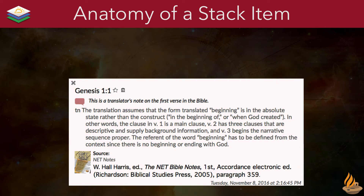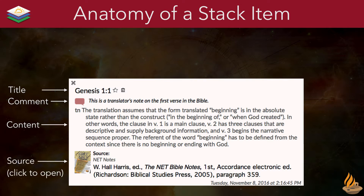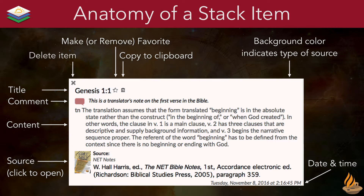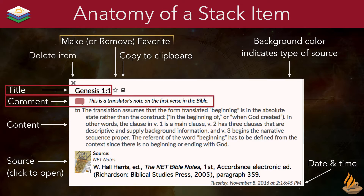Each item in a stack is packed with information. Along the side we have a title, which typically contains a verse reference, chapter, or article name; a place to type personal comments; the content itself; and its source, which we can click to reopen. Along the top there's a delete button, a place to mark the item as a favorite, and a button to copy the information — title, comment, content, and source — to the clipboard. The background color of the stack item indicates the type of source, and the date and time the item was added to the stack is displayed on the bottom right. Most of this information is automatic and fixed. We can edit the title and the comment of a stack item, and we can also toggle the favorite button.